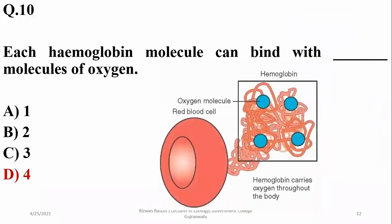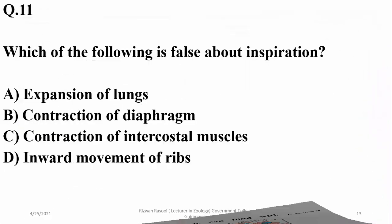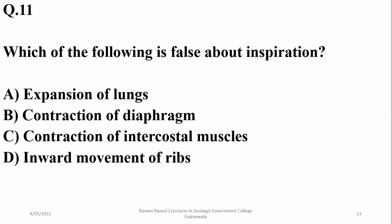Question eleven: which of the following is false about inspiration? Inspiration involves lung expansion and contraction of the diaphragm and intercostal muscles. However, the ribs move upward and outward rather than inward, so delta is the wrong statement about inspiration.